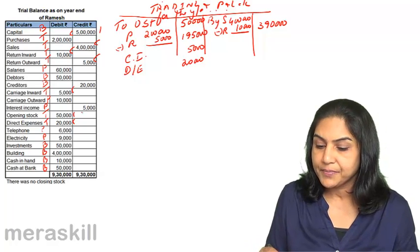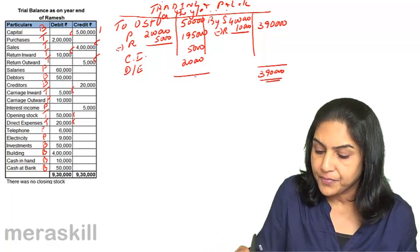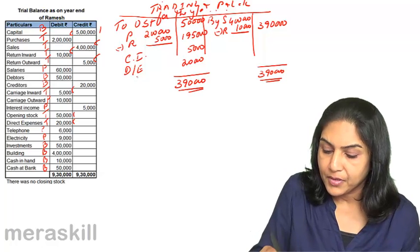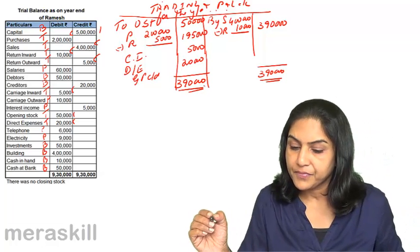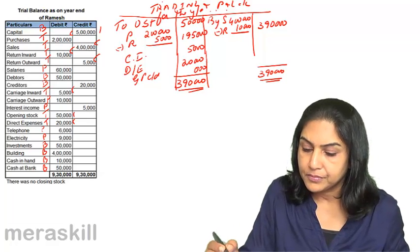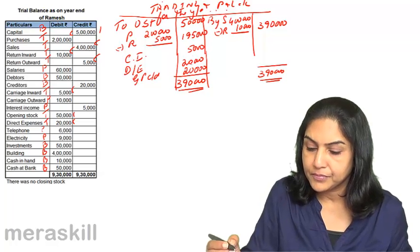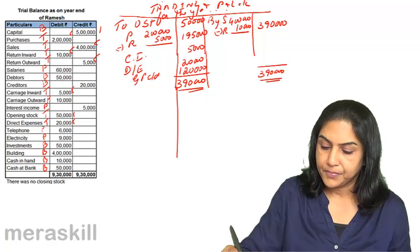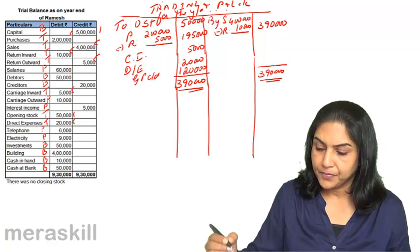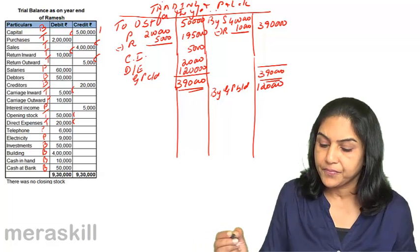So what do we get? We got a total on the sales side of 3,90,000. The gross profit carried down is 1,20,000. By gross profit brought down, we have 1,20,000 carried forward. We are making the trading and profit and loss account together.